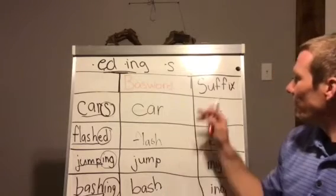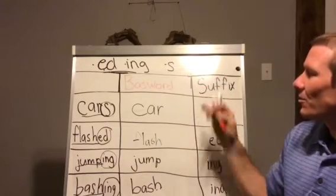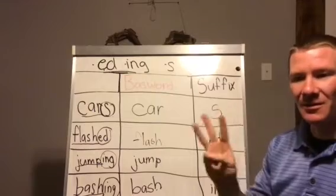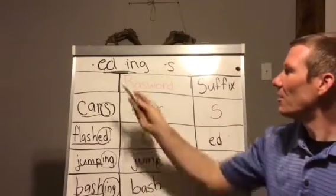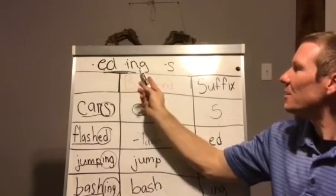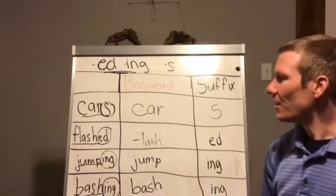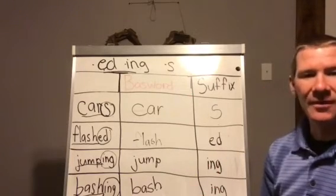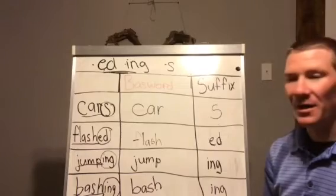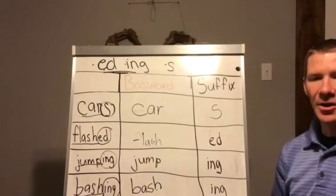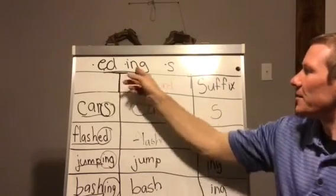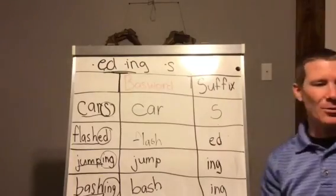So our suffix goes at the end of our word, and we have three main suffixes that we've been talking about: -ed, -ing, and -s. A suffix helps define the word, when it's happening or how many there are. I hope you continue to learn about your suffixes as we go throughout the week.